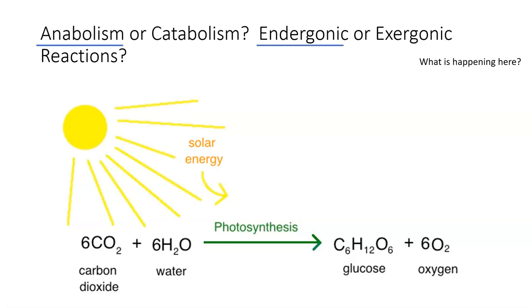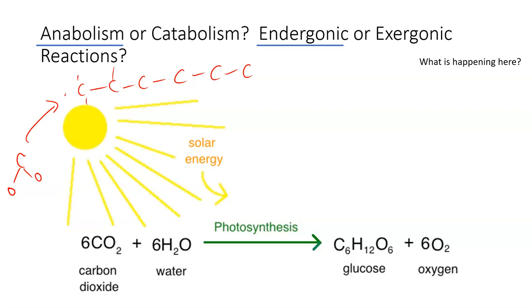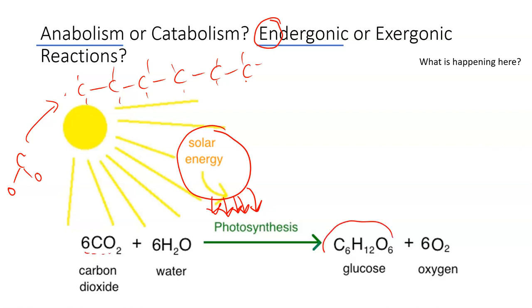The answer is: photosynthesis is anabolic and endergonic. It is anabolic because we are building something up — taking small CO₂ molecules and building up a large glucose molecule, a big six-carbon chain with many oxygens and hydrogens. It is endergonic because energy has to enter: the sun must provide energy at the very beginning of the reaction so you can take these small bricks and build up a large brick house.